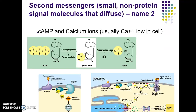Sometimes in a transduction pathway you don't always have proteins. Sometimes what you might have instead are what we call second messengers. They're called second messengers because technically your first messenger is going to be the signal molecule, or the ligand that comes in.